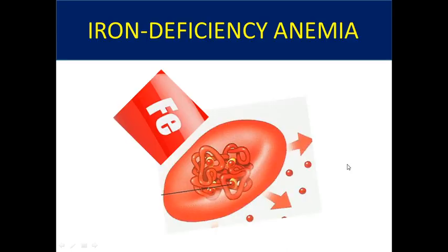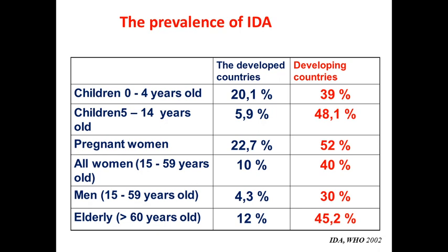Let's discuss the most widely spread anemia — iron deficiency anemia. Prevalence of iron deficiency is very high in developing countries compared to developed countries. In our country, among children the prevalence is 35 to 50 percent. Even half of our women, mostly pregnant women, have iron deficiency anemia. Among men, one to three parts suffer from anemia, and the older the patient, the more prevalent anemia becomes.